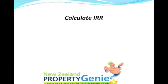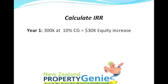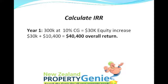So let's see how we calculate the IRR. In year one, the $300,000 property at 10% capital growth gives us a $30,000 equity increase in the first year. Adding the cash-on-cash return of $10,400 for the first year gives an overall return of $40,400.